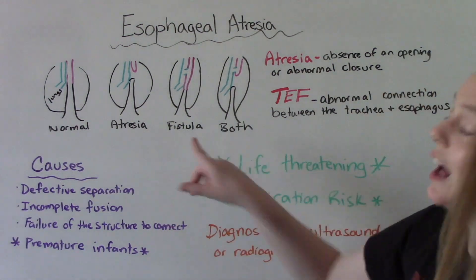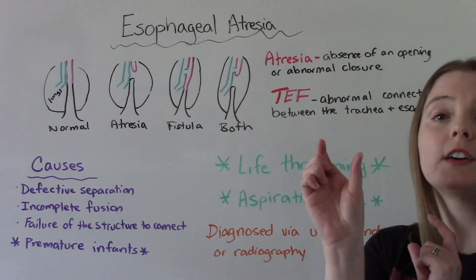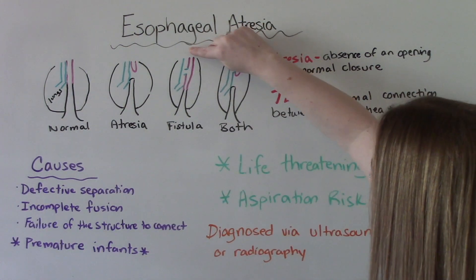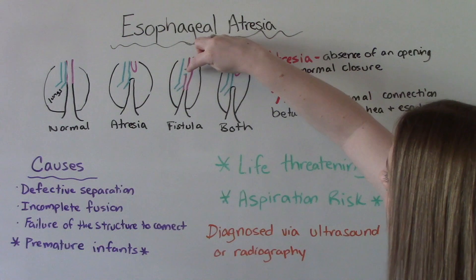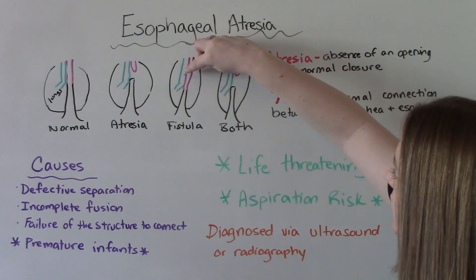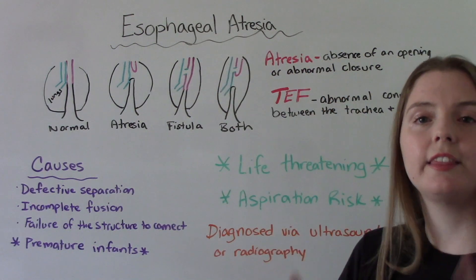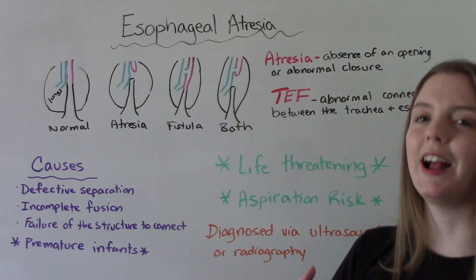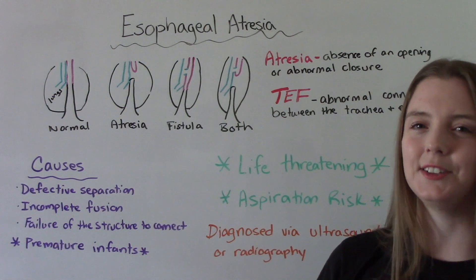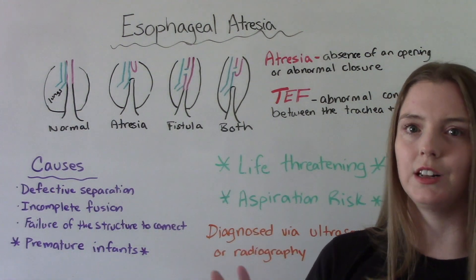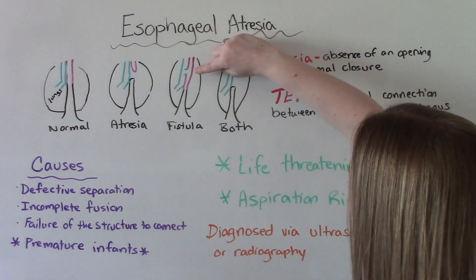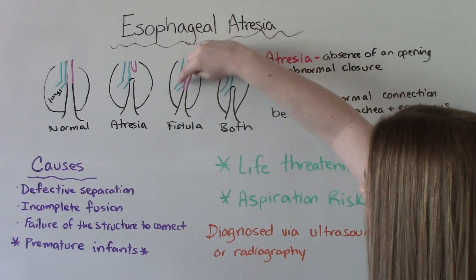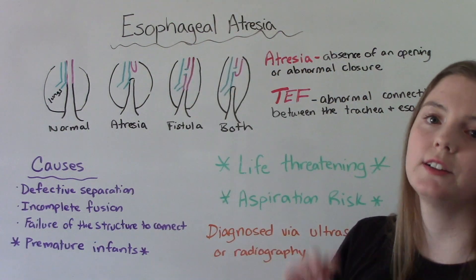A fistula is that abnormal connection between the two. So you have your esophagus and your trachea, and there is a little connection area in between the two. That's very dangerous, because when you eat, our food should go down our esophagus and into our stomach — it should not go into our lungs. This fistula is an extra passage that can have food accidentally go down into the lungs, so we don't want that.